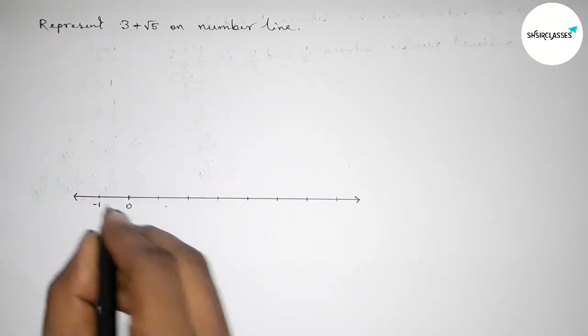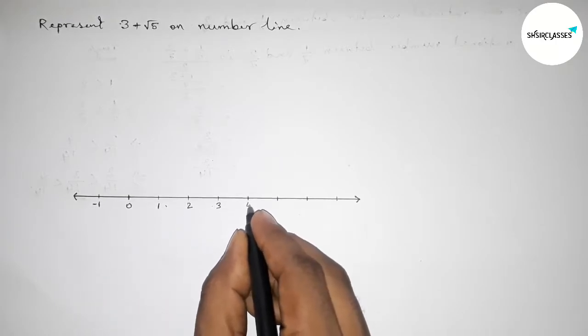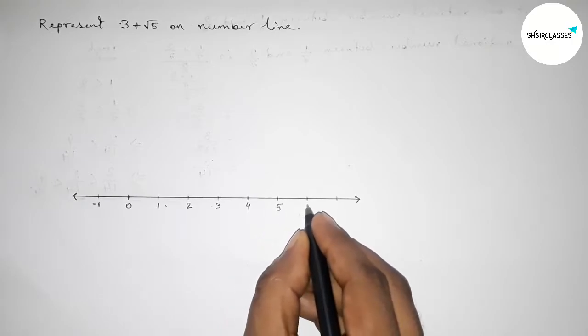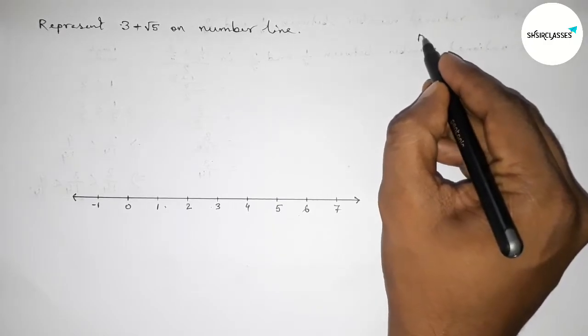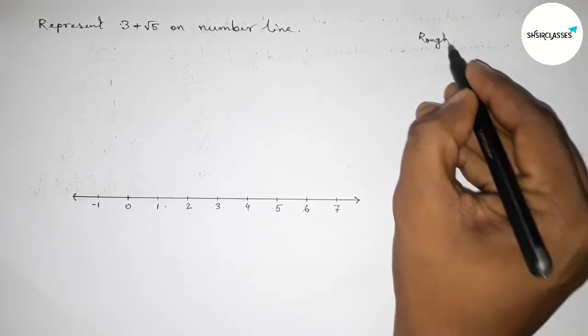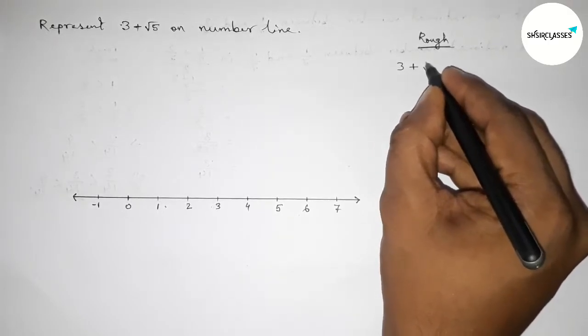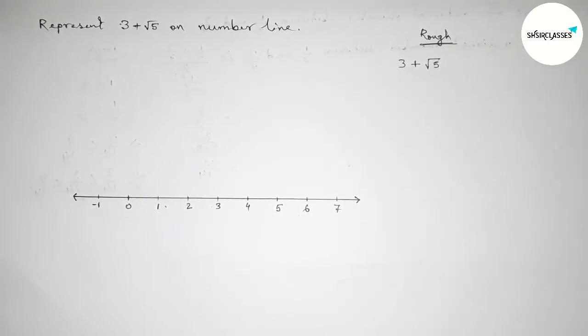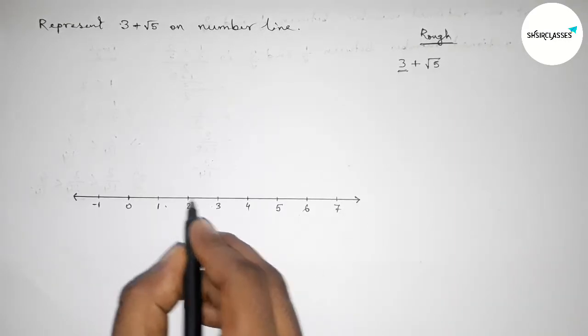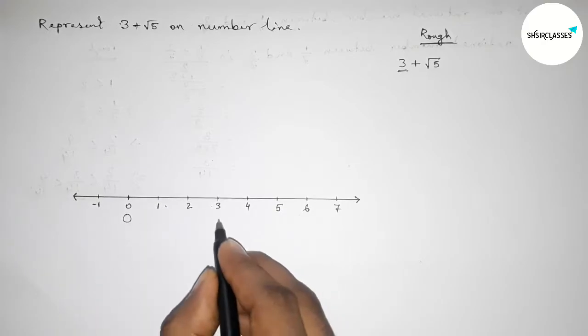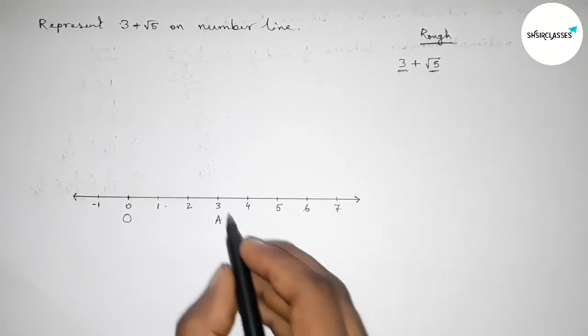Now taking here minus 1, here 1, then 2, then 3, 4, 5, 6, 7, and continuous. Now roughly discussing some important calculations here. So we have to represent 3 plus root 5 on the number line. So here 3 units, from 0 to 3 this is 3 units. So taking point O and here A. Next, representing root 5 from 3 to this side.